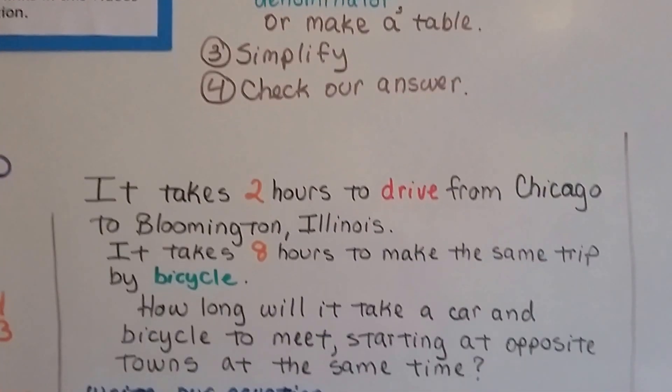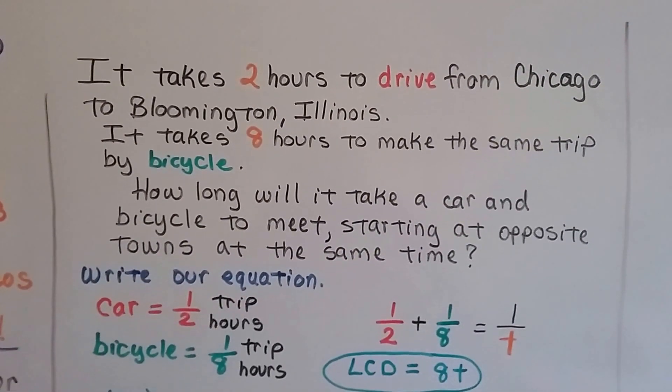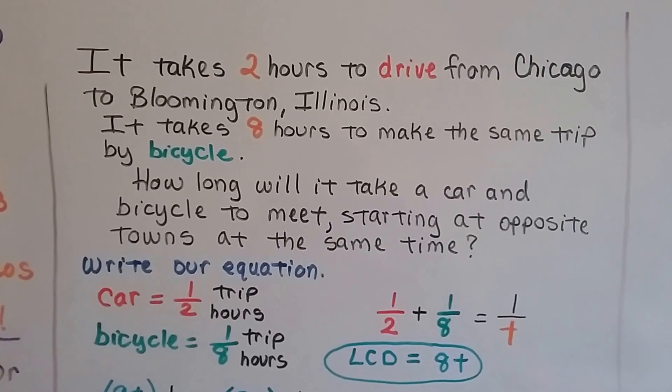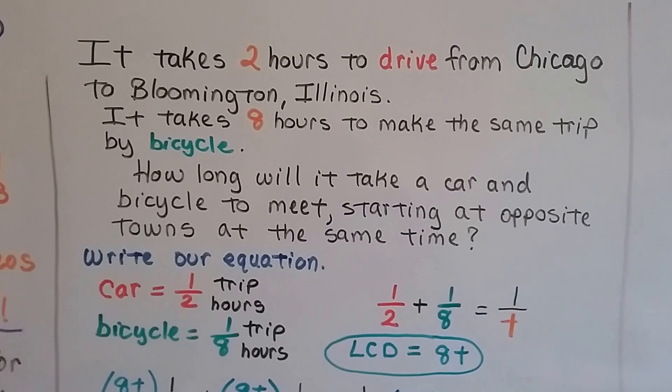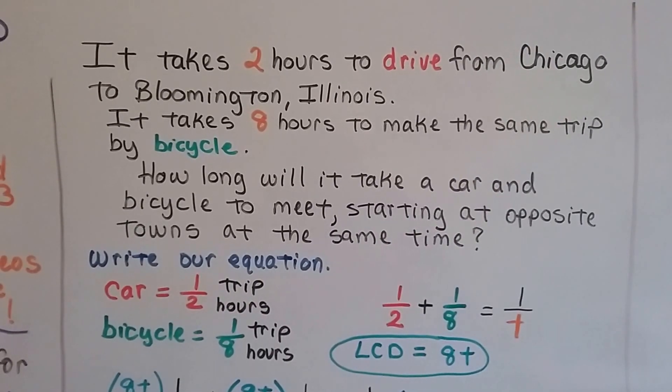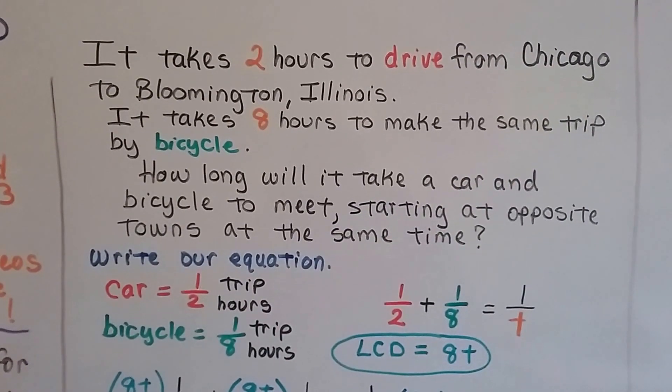So here's our first one. It takes two hours to drive from Chicago to Bloomington, Illinois. It takes eight hours to make the same trip by bicycle. I don't know who would want to ride a bike that far. But how long will it take a car and a bicycle to meet? So they would meet somewhere in the middle of that distance. If they were starting at opposite towns at the same time.